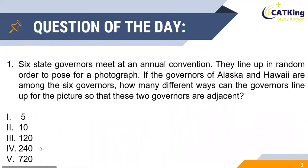So it is given to us that 68 governors, including the governors of Alaska and Hawaii, line up for a picture. Let us call these governors A, B, C, D, E and F.